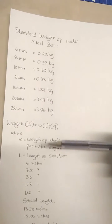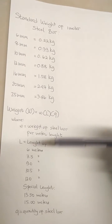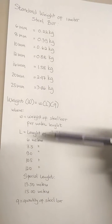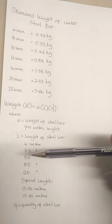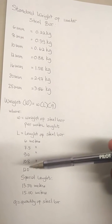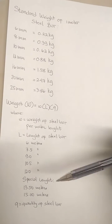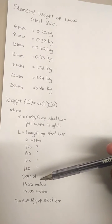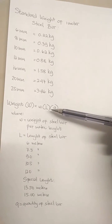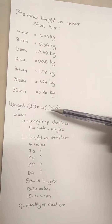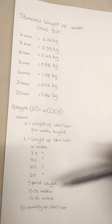Regarding the length of the steel bar, we have different lengths that we can purchase at the hardware: 6 meters, 7.5 meters, 9 meters, 10.5 meters, 12 meters, and also special lengths that you can request to be cut — 13.5 meters and 15 meters. The value of L in this formula depends upon the length of the steel bar being used.